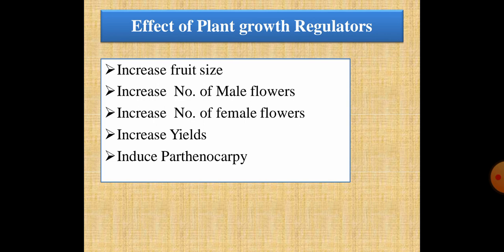The effects of plant growth regulators on cucurbits are: first, an increase in fruit size — when GA3 is applied, it increases fruit size; second, an increase in the number of male and female flowers, thereby increasing yield; if fruit size increases and female flowers increase, ultimately yield increases; and third, induction of parthenocarpy, which means seedlessness.